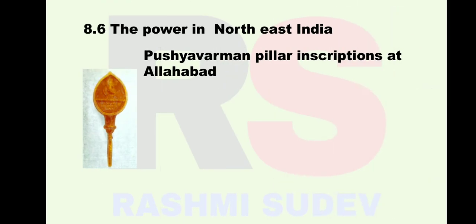8.6 Powers in Northeast India: There is a story in the Mahabharata where Arjuna marries Ulupi, who was the princess of Manipur in east India. The state of Kamarupa emerged in the 4th century CE, established by Pushyavarman. His name is mentioned in the pillar inscription of Allahabad, and many inscriptions of Kamarupa kings are available.